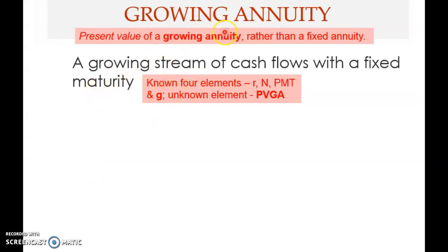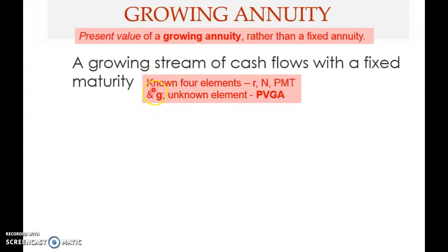Welcome back. We are looking at Growing Annuity — a growing stream of cash flows with fixed maturity. There are four known elements: R (the interest rate or discount rate), N (the number of periods), the payment, and G (the growth rate in the payment). The payment grows at this fixed rate G. The unknown element is usually PVGA, the present value of growing annuity.